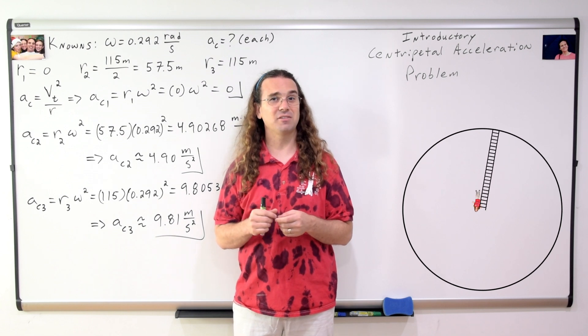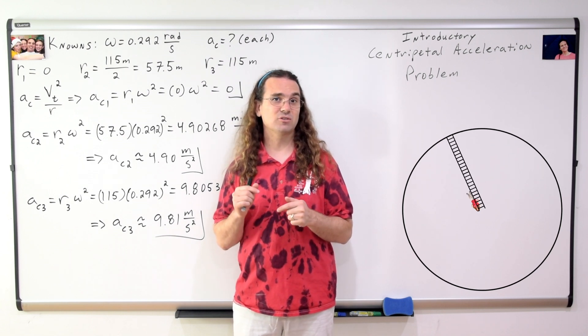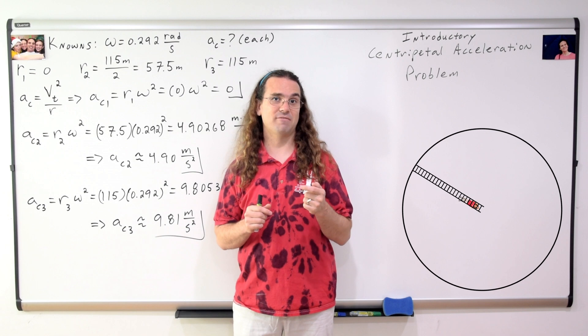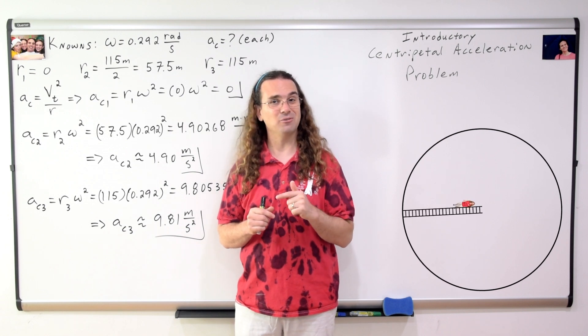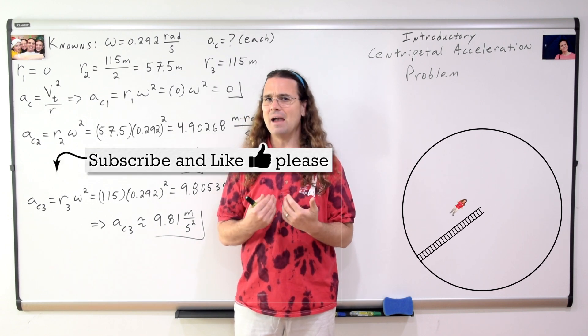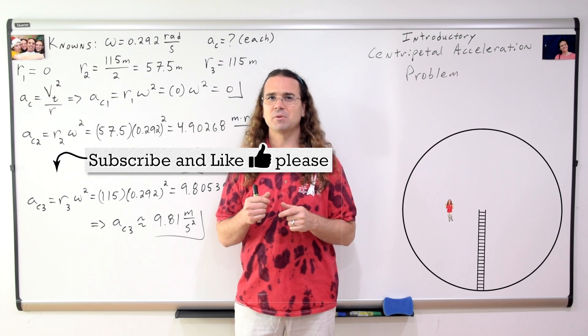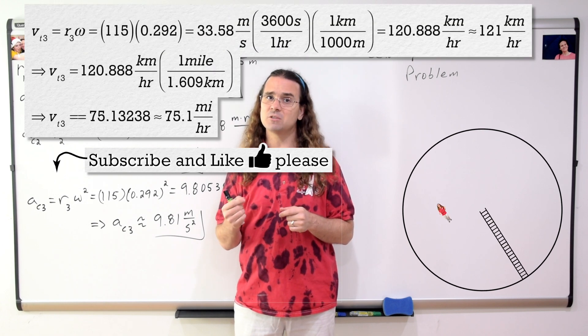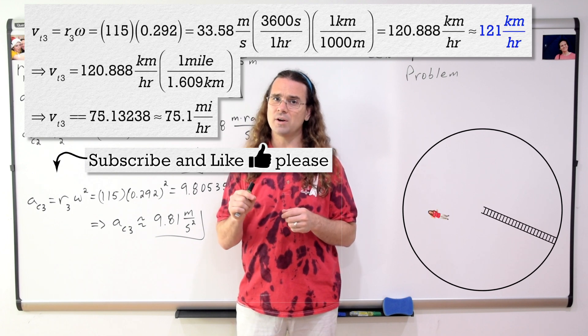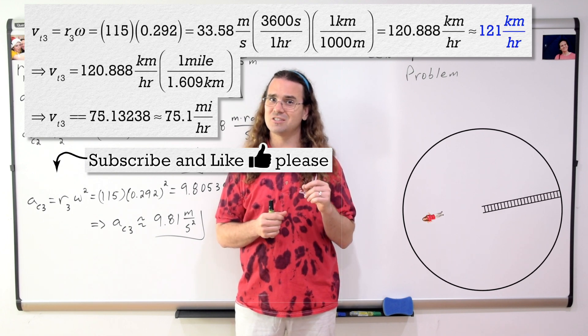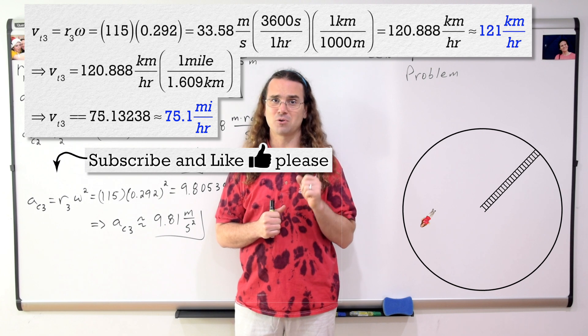But I should tether myself to the ladder, because if I accidentally give myself the slightest push, I will slowly float away from the ladder, until I reach the outside of the space station. And I will have almost zero tangential velocity, but the tangential velocity of the rim of the space station is roughly 120 kilometers per hour, or 75 miles per hour.